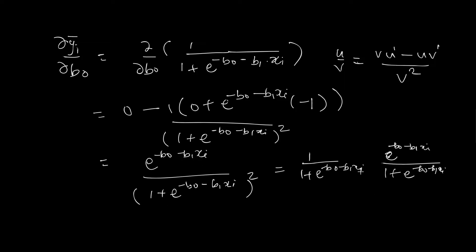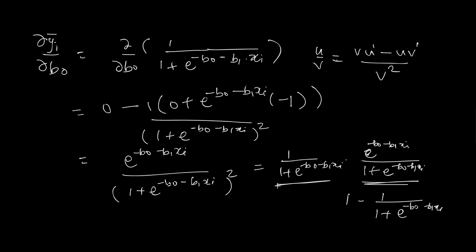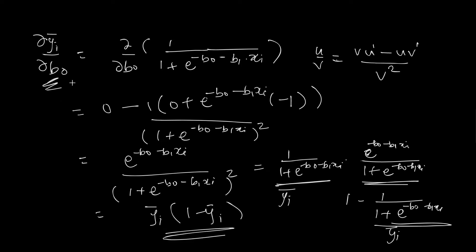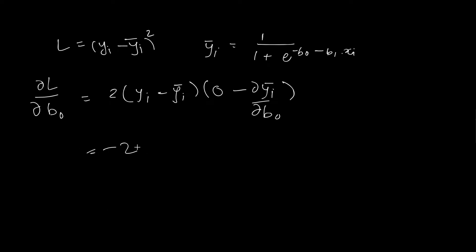This expression can be rewritten by splitting into two terms. The value of this particular term can be rewritten as 1 minus 1/(1 plus e raised to minus b0 minus b1*x_i). Notice that this is actually equal to y_i-bar — that is the equation we are using to predict. So this whole expression is equal to y_i-bar times (1 minus y_i-bar). Bringing the negative sign outside, the partial derivative of the loss with respect to b0 is: minus 2 * (y_i minus y_i-bar) * y_i-bar * (1 minus y_i-bar).